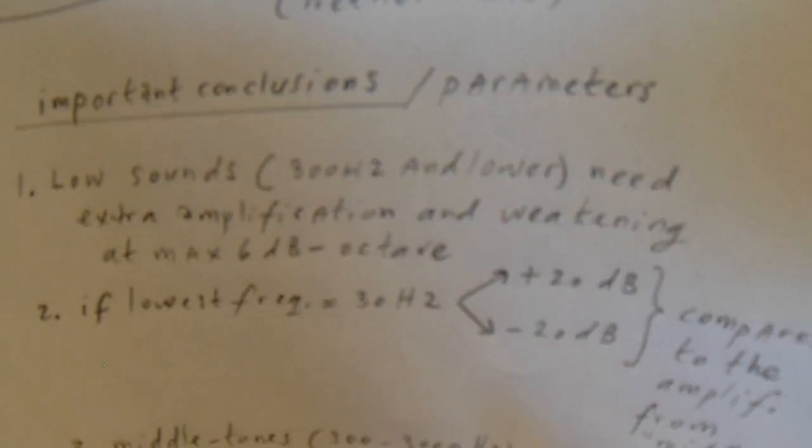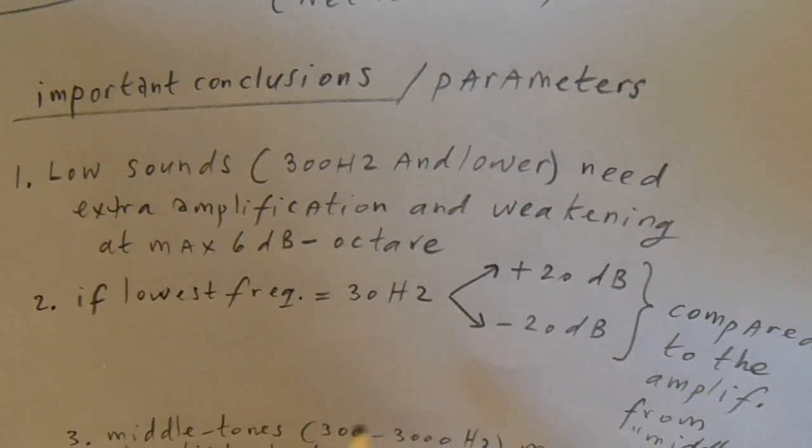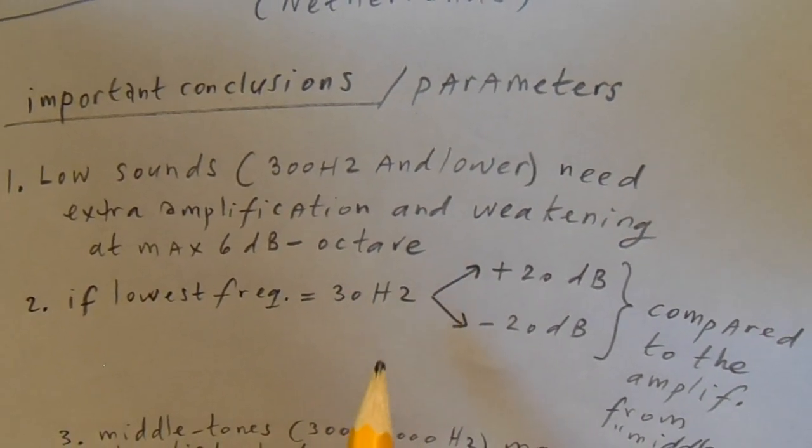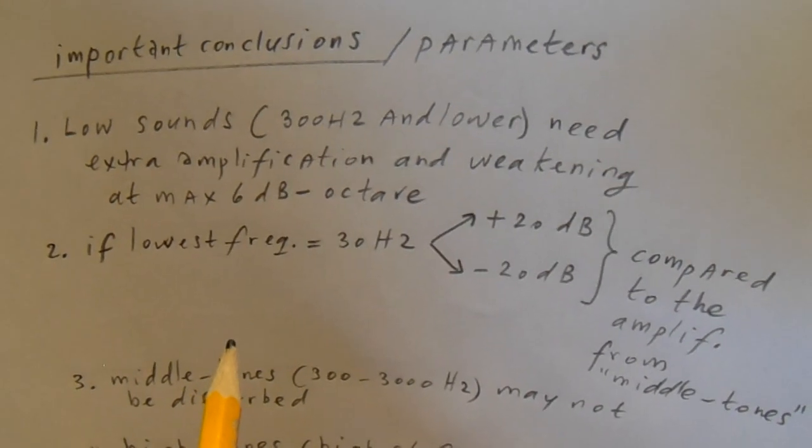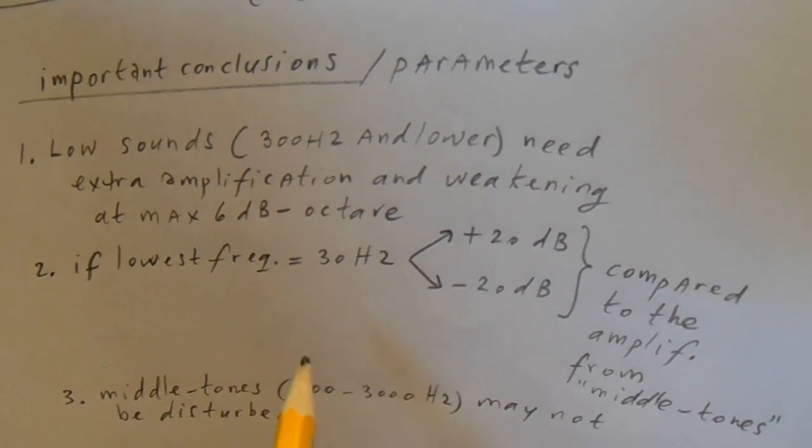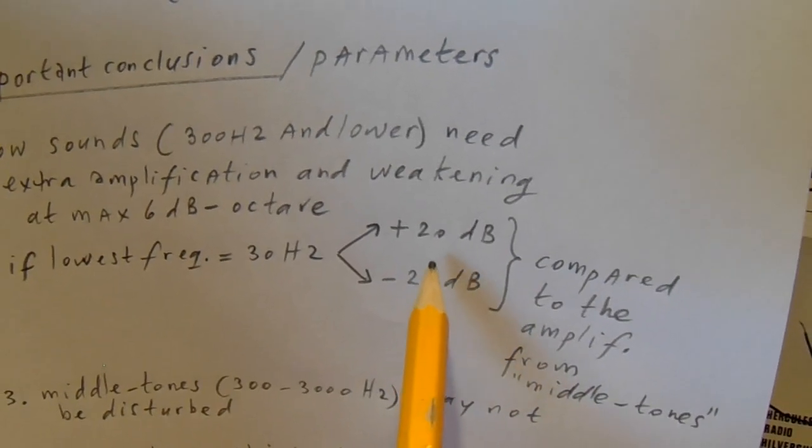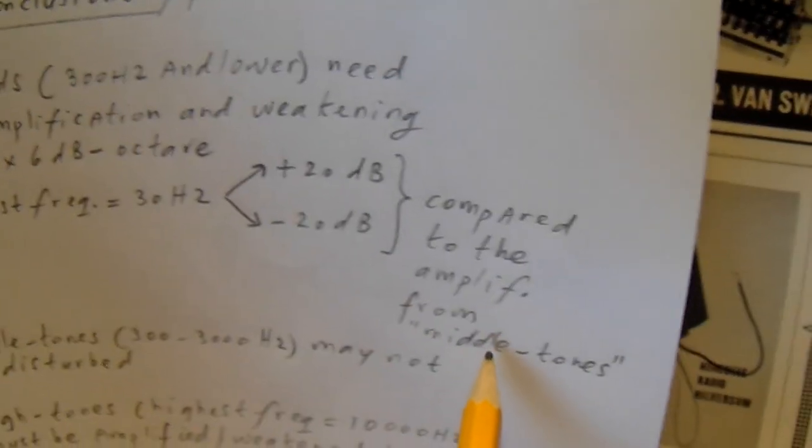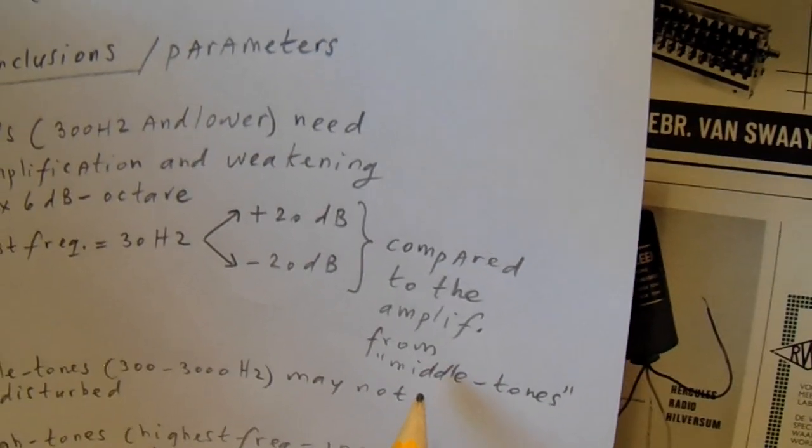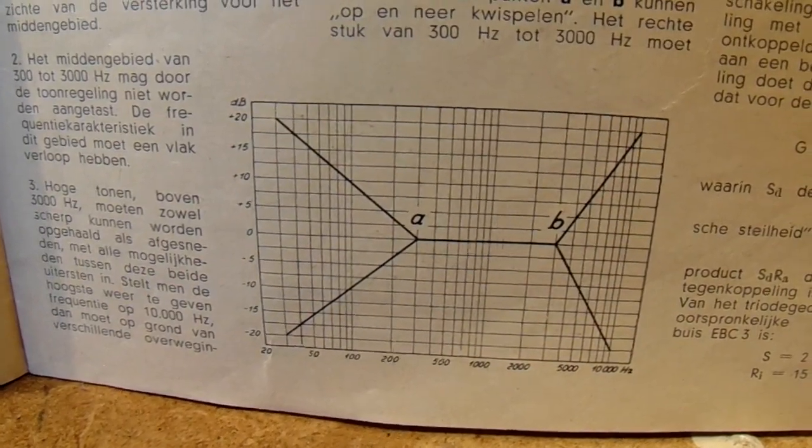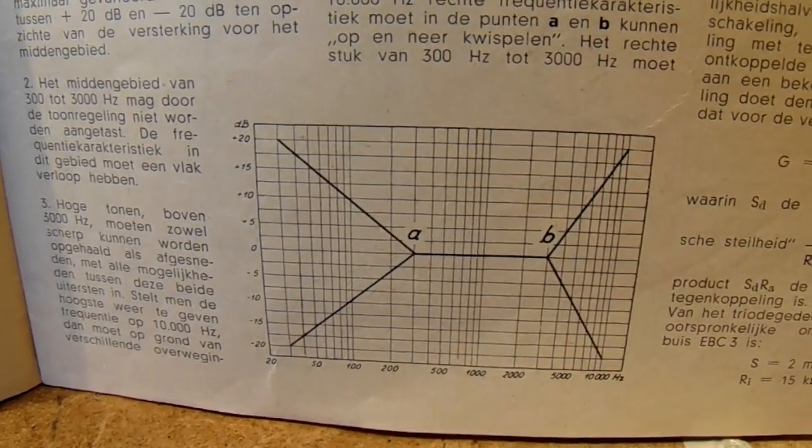The low sounds need extra amplification and weakening at maximum 6 decibels per octave. When you want to get to proper sounds, the lowest frequencies, the low frequency band, must be amplified and weakened by 20 decibels compared to the middle frequencies. And they are, as I showed earlier here, 300 up to 3000 or perhaps 4000.